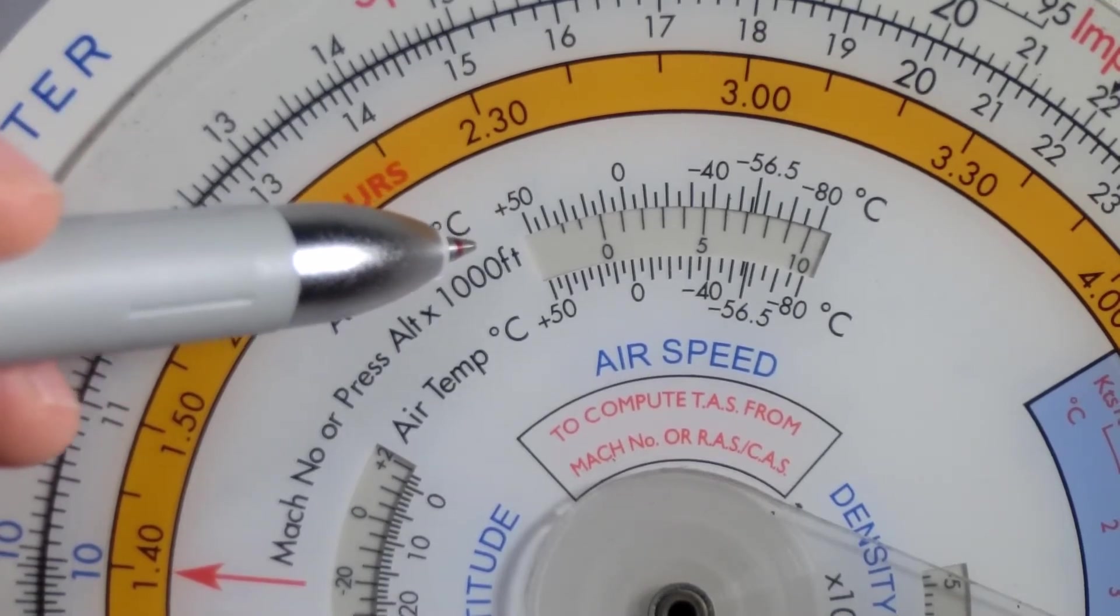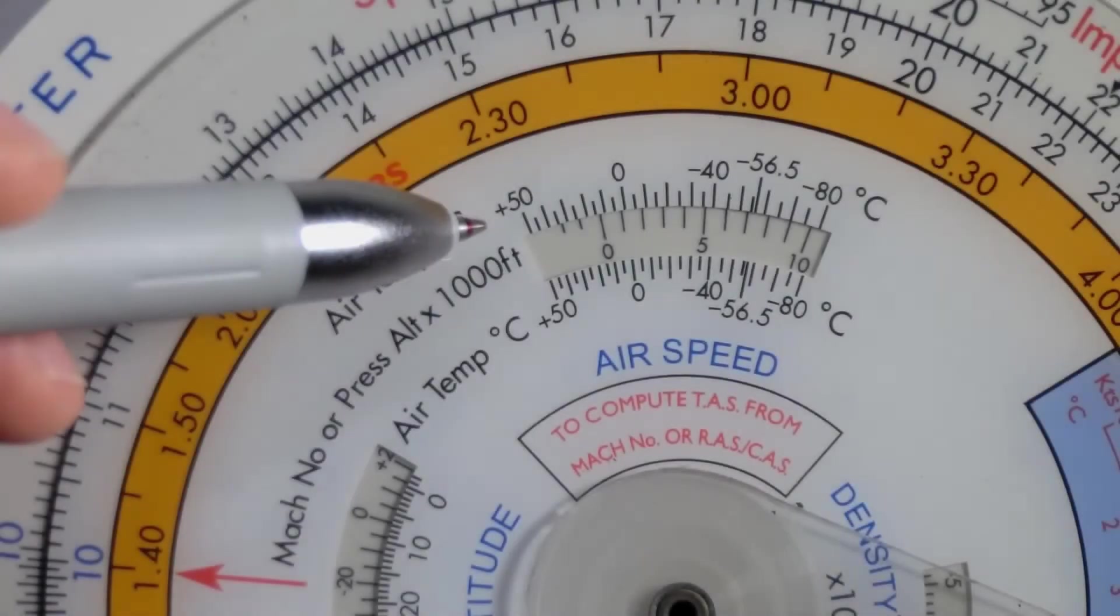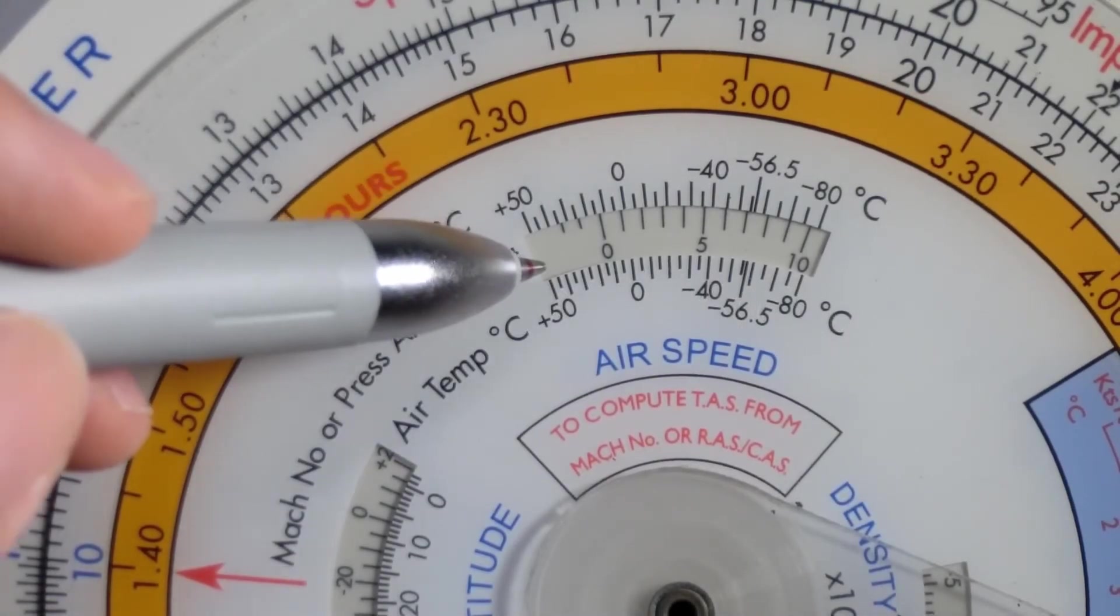In our example, let's assume that the aeroplane that we're flying is at 15,000 feet and that the corrected outside air temperature is minus 20 degrees Celsius. And we're given a speed of 160 knots. So let's input that into the table.